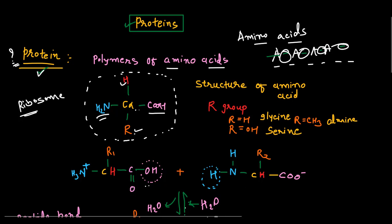These groups are all attached to the central carbon atom, which is called the alpha carbon. Different groups are attached to this central carbon, so it is called the alpha carbon, and this forms the alpha amino acid. Based on the different R groups, amino acids differ in their structural characteristics.